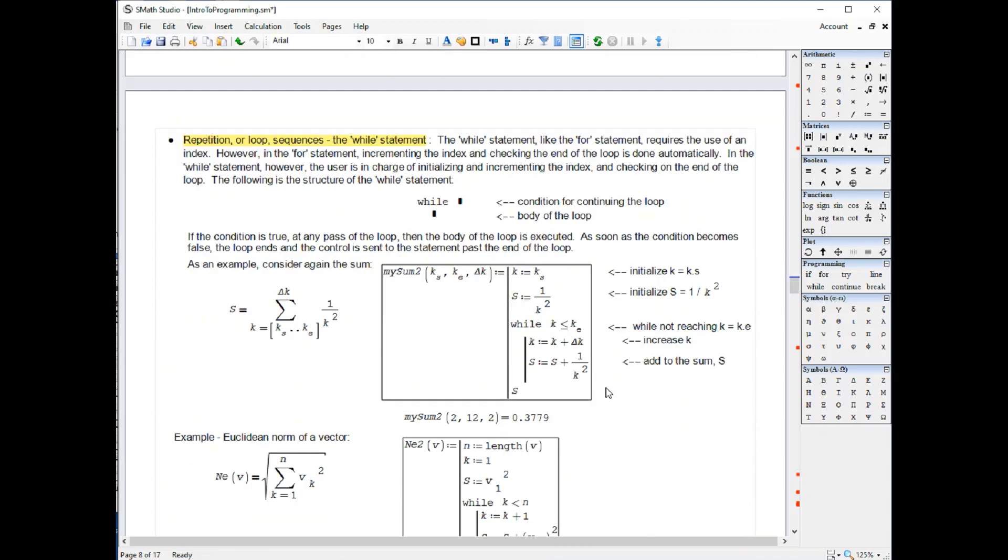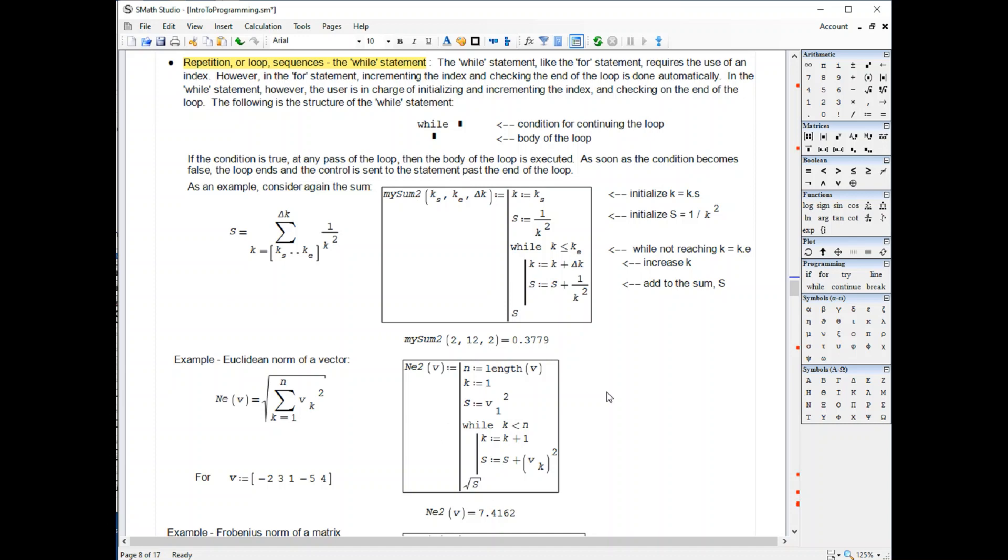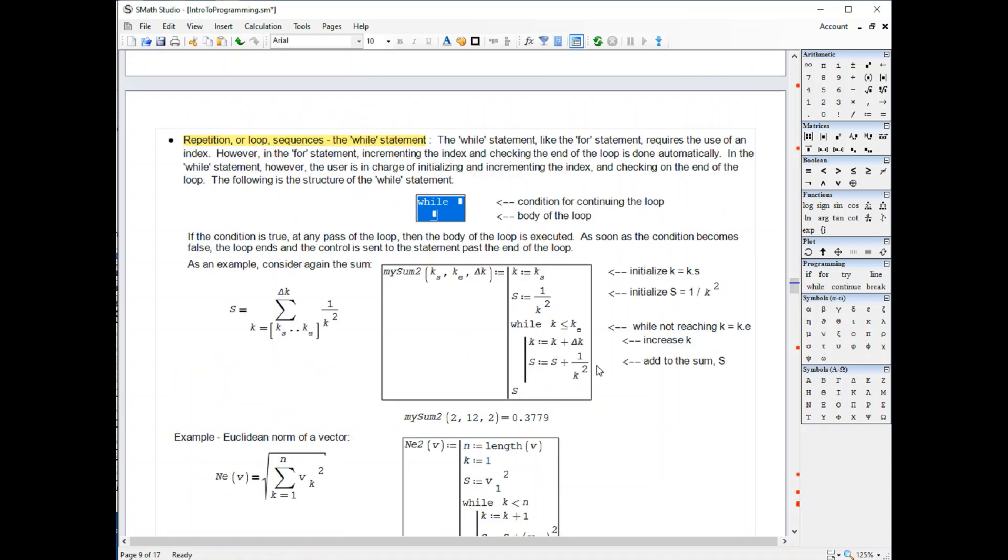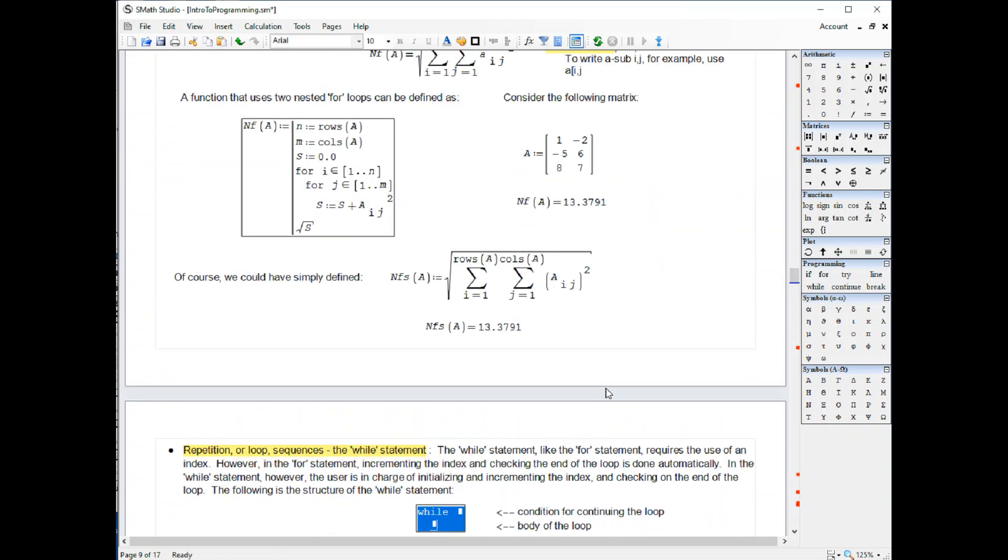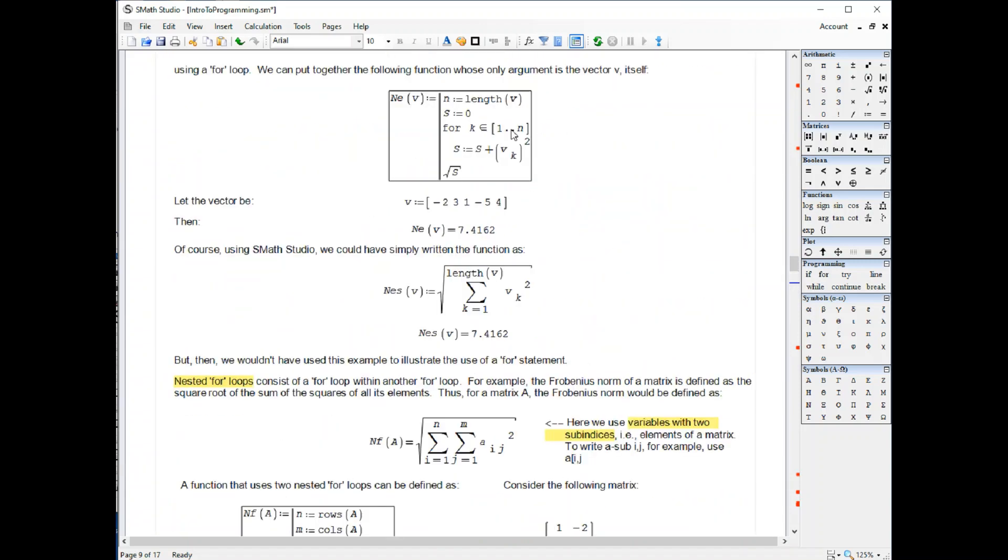There's another statement called the while statement that can be used for loops. In this one, you have a condition for continuing the loop, and then you have the body of the loop. The main difference between the for and the while is in the for statement, the for itself controls the index. All you have to provide is the value of the index, and then it controls the loop.